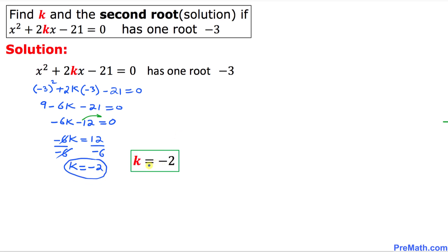So thus we figured out k equal to negative 2 is our answer. And now in our next step, this is our quadratic equation. Wherever we see k I'm going to replace it by this negative 2.